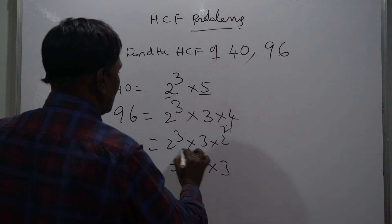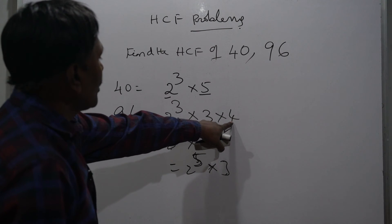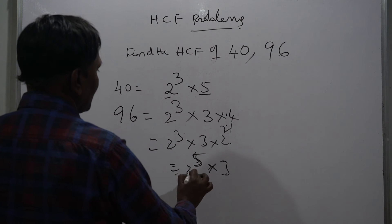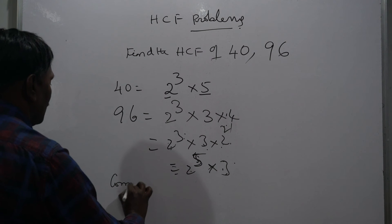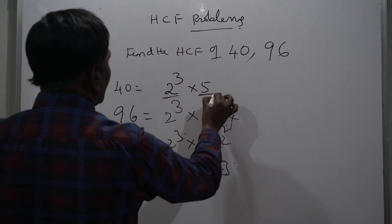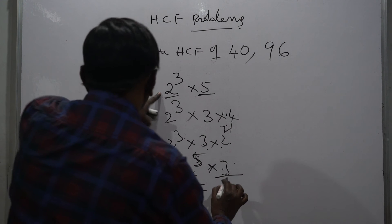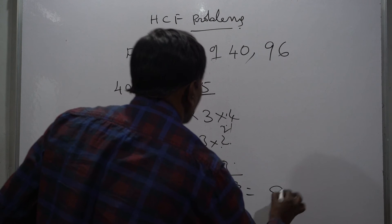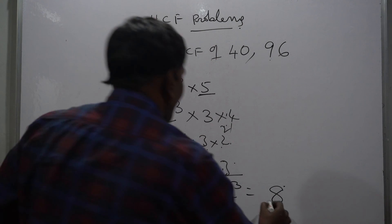2 cubed into 2 squared is 2 to the power 5 into 3. 2 to the power 3 is 8. So the HCF of 40 and 96 is 8.